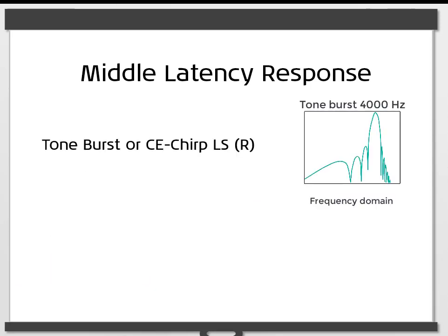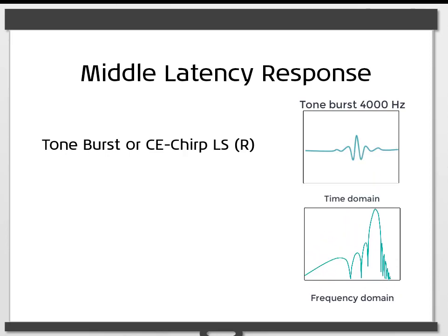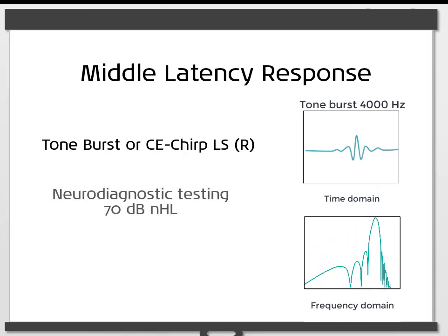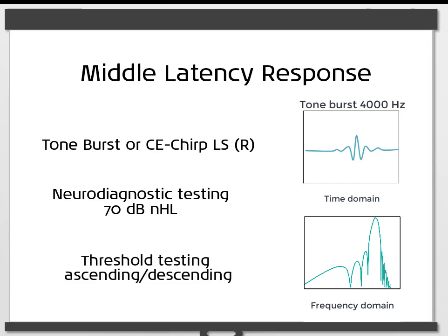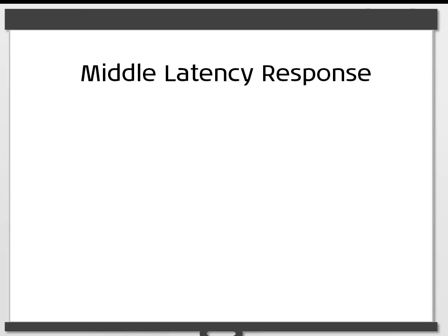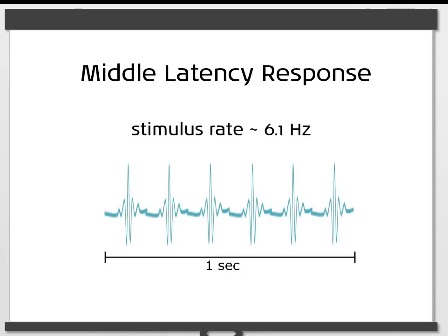A tone burst or member of the CE-CHIRP family of stimuli can be used to elicit the MLR. For neurodiagnostic MLR testing, it is recommended to use a stimulus with an intensity of around 70 dB NHL, whereas with threshold testing, an ascending-descending method is recommended. The stimulus repetition rate should be lower than that used in ABR in order to reliably record the response. A commonly chosen stimulus rate is 6.1 stimuli per second.